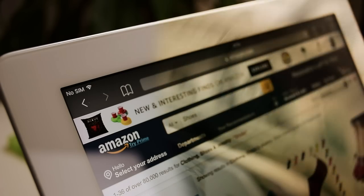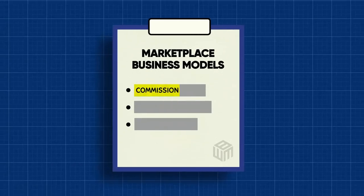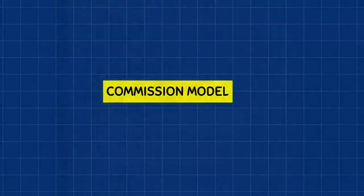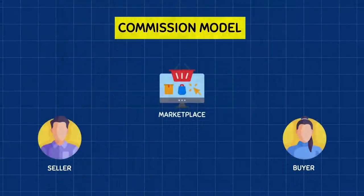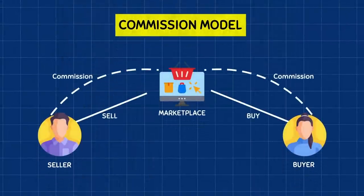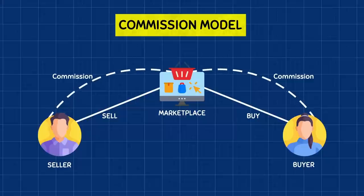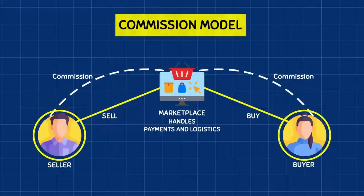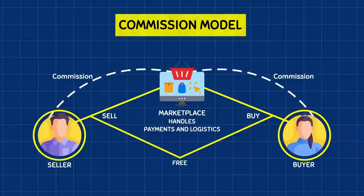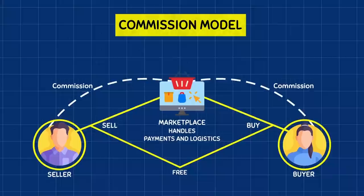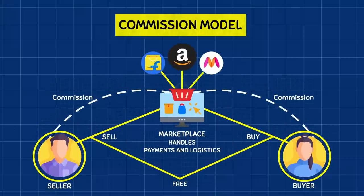The first method of generating revenue from a marketplace is called the commission model. This is arguably the most widespread way for a marketplace to make money. They take a commission for every successful transaction. And the reason they're able to justify this is that they handle the payment and logistics for each sale. Buyers and sellers are okay with losing this money to commissions because they're using these platforms for free. Examples of companies that use this model include Flipkart, Amazon, and Myntra.